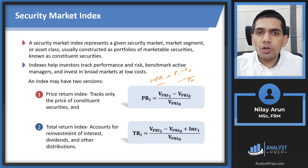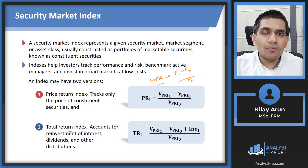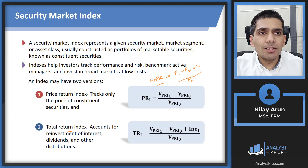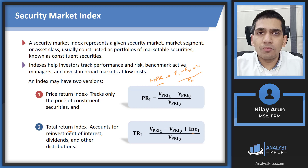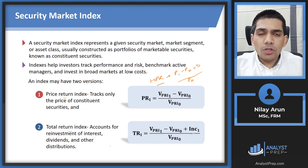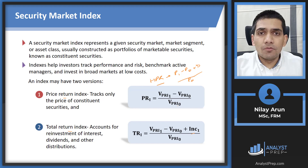When we talk about the total return index, in addition to this return, we add another component: income. So if we're talking about dividends, we add the dividend in the numerator. For total return indices, in addition to the difference in prices, we add the income return.